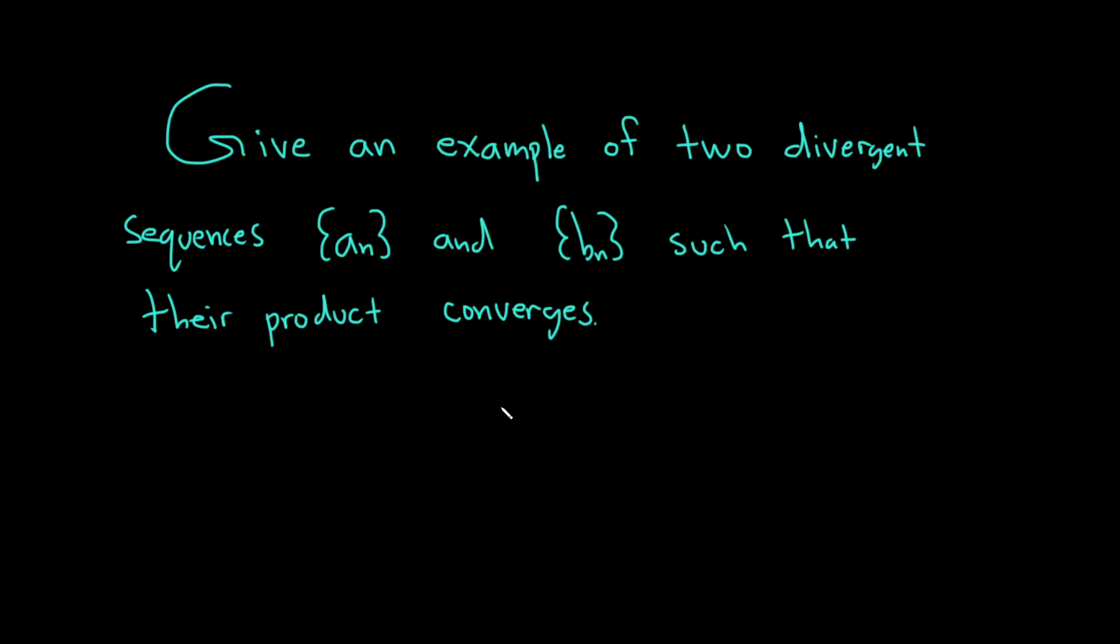Give an example of two divergent sequences, a sub n and b sub n, such that their product converges. Solution.